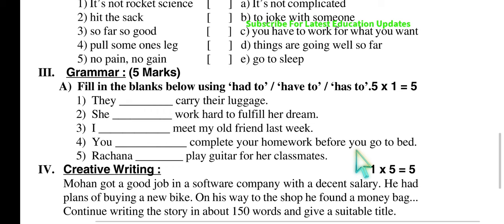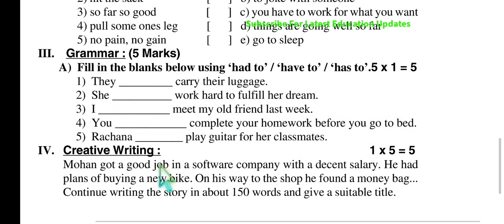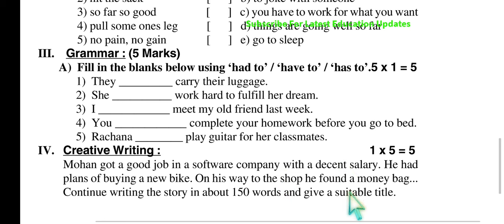The grammar part again covers 'had to,' 'have to,' and 'has to,' as explained in the previous model paper. The last section is creative writing: Mohan got a good job in a software company with a decent salary and had plans of buying a new bike. Think about the bike model, the company, and how much money you would like to spend. On his way to the shop, he found a money bag. Continue writing the story in about 150 words and give a suitable title — the twist is that he found a money bag.